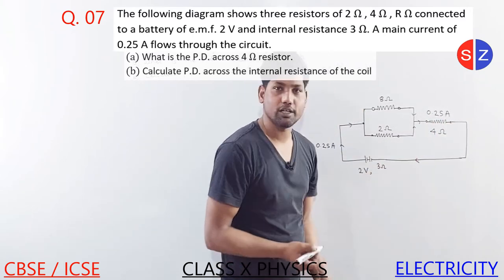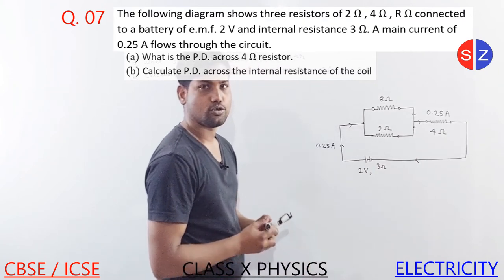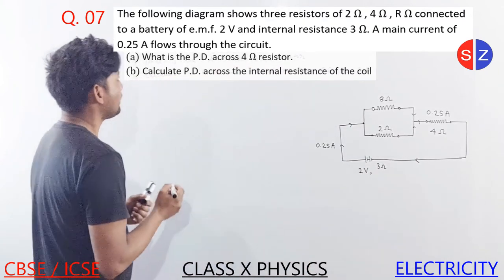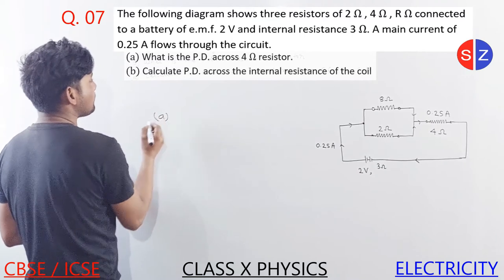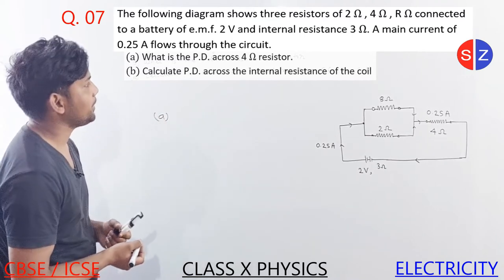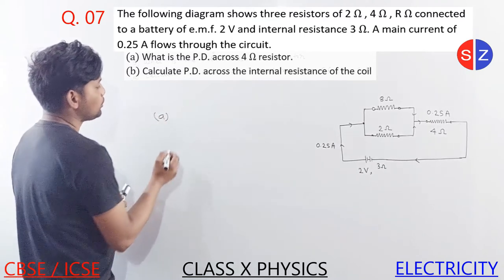So if we have to find the voltage, what do we use? Ohm's law. This is a famous law. For the first part, we have to find the PD across the 4 ohm resistor, so we use Ohm's law.